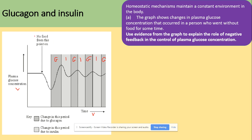This is the point from where there is no food, meaning no glucose. Remember that glucagon is secreted to increase the blood glucose concentration, but insulin acts to decrease the blood glucose concentration. From the graph we can see there are fluctuations.